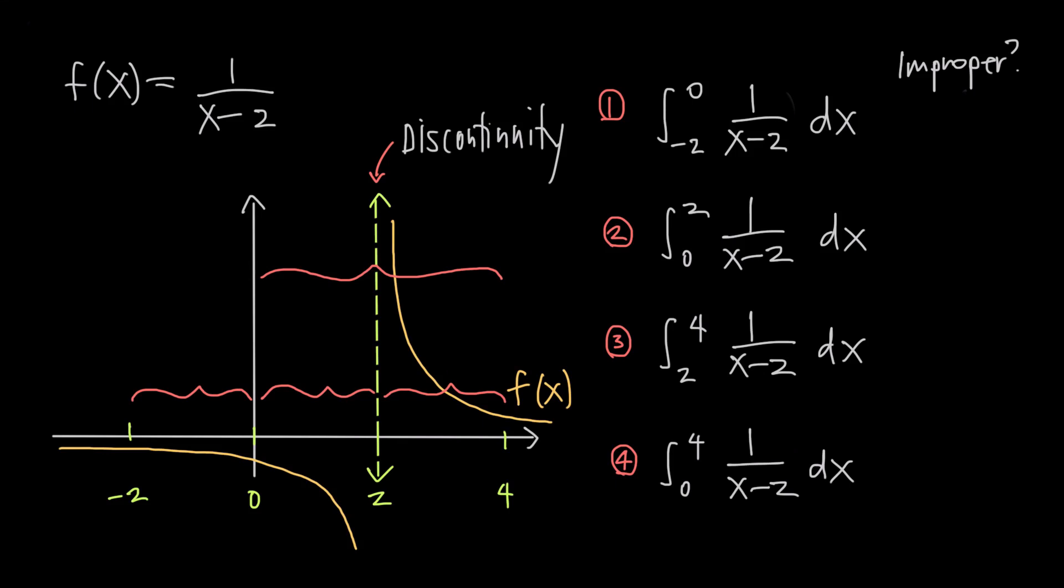With this integrand, if we integrate over negative 2 to 0, then the integral isn't improper because there's no discontinuity on that interval.